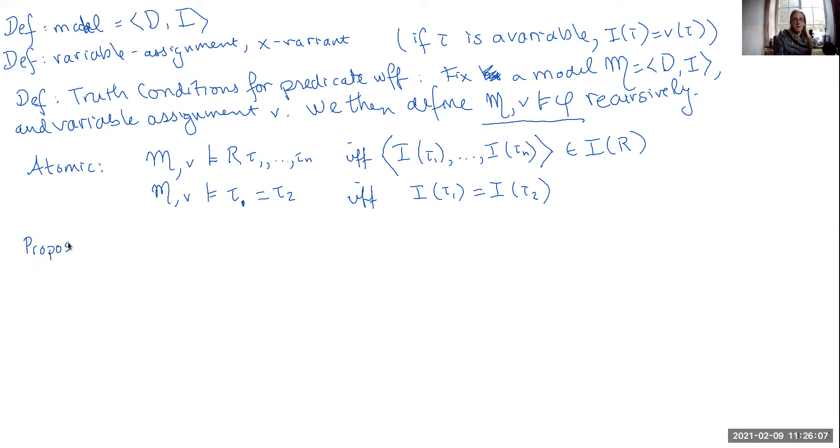Now we have the propositional connectives, where you take atomic formulas or other formulas and combine them together using negation, conjunction, disjunction, and implication. These are going to be exactly as they were in the propositional logic. So M V makes not phi true if and only if M V doesn't make phi true. A conjunction is true if and only if both of the conjuncts are true.